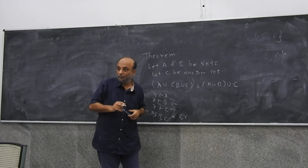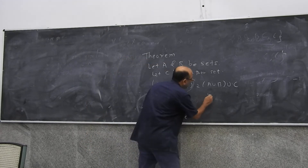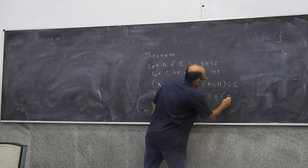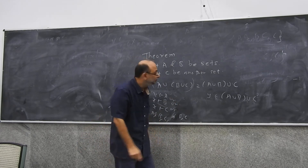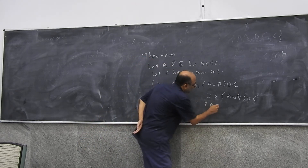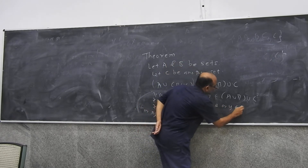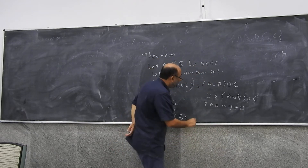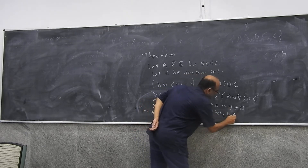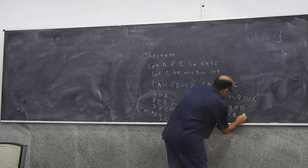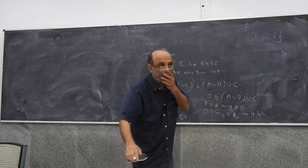Let's first start checking whether it is possible for an element to belong to this collection but not to this collection. Let's start by looking for such elements. Suppose such an element exists. Suppose you have Y which belongs to this collection. So what does this mean? This means that Y either belongs to A, or Y belongs to B, or Y belongs to C.